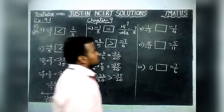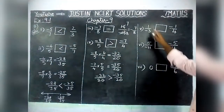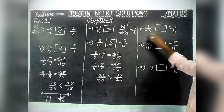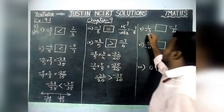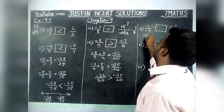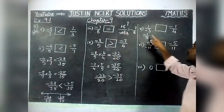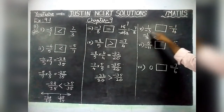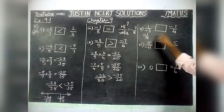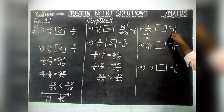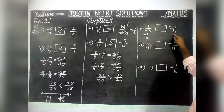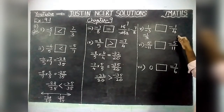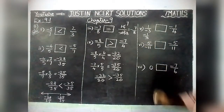Fifth question: left-hand side is 1 by minus 3, right-hand side is minus 1 by 4. The minus is in the denominator, so we rewrite as minus 1 by 3. Now left-hand side is minus 1 by 3 and right-hand side is minus 1 by 4. Both numerators are equal. We have to compare the denominators 3 and 4. On the number line, minus 1 by 4 will come on the right-hand side and minus 1 by 3 on the left-hand side.